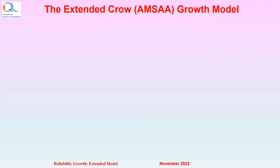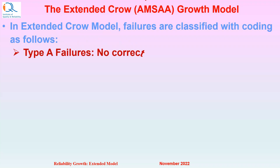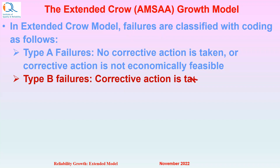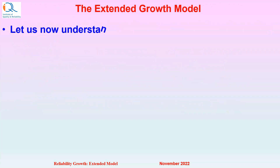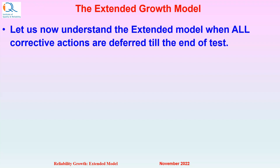Now let us understand the concept of the Extended Growth Model. In the Extended Crow-AMSAA Growth Model, failures are classified with coding as follows: Type A failures, wherein no corrective action is taken or management has decided that corrective action is not economically feasible; and Type B failures, where corrective action is taken on these failure modes but after the test. We can denote various failure modes as B1, B2, etc. Let us now understand the Extended Model where all corrective actions are deferred till the end of the test.